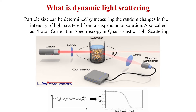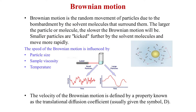In further slides I will come to the principle behind measurement of particle size analysis by DLS. As mentioned, with a suspension of particles comes the terminology Brownian motion. Brownian motion is the random movement of particles due to the bombardment by the solvent molecules that surround them. The larger particles move slowly and the finer particles move faster. Particle size, sample viscosity, and temperature all influence the Brownian motion.